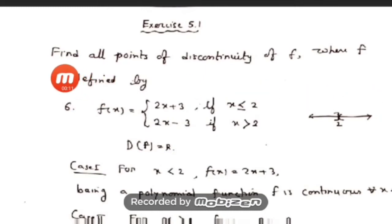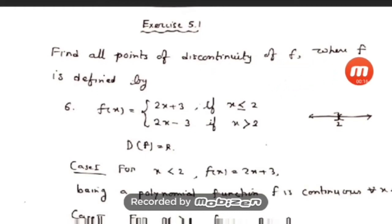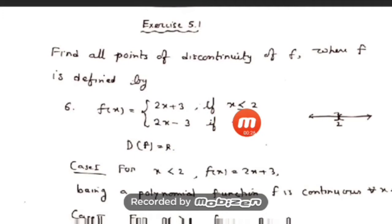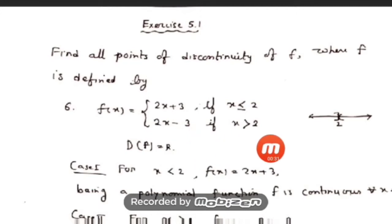The question is: find all points of discontinuity of f, where f is defined by f(x) equal to 2x + 3 if x is less than or equal to 2, and f(x) equal to 2x − 3 if x is greater than 2.